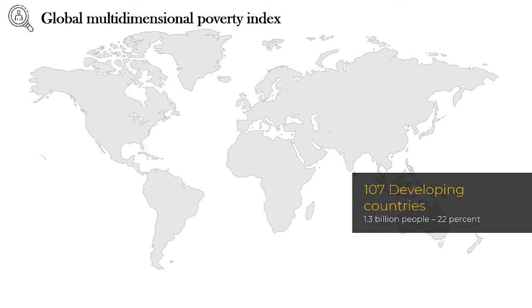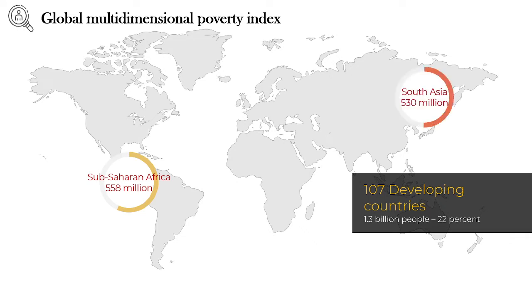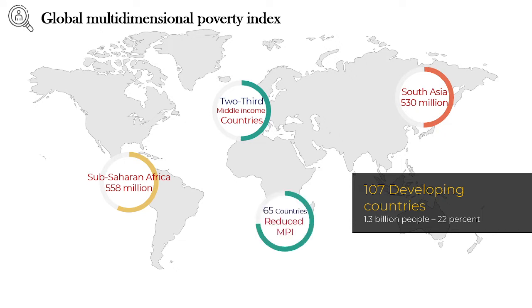The global MPI shows that around 107 developing countries are still under poverty level, accounting for about 22 percent — that is 1.3 billion people. Most of this is from sub-Saharan African and South Asian countries, where around 518 million and 530 million people respectively live under the poverty line. Several steps and policies have been taken, and around 65 countries have reduced their poverty levels based on the MPI.